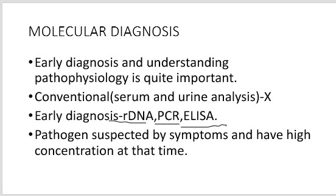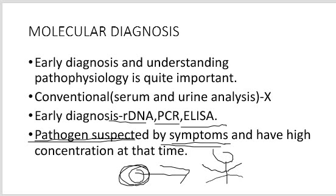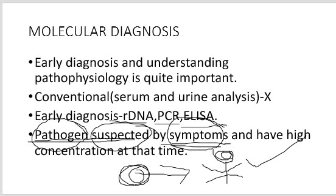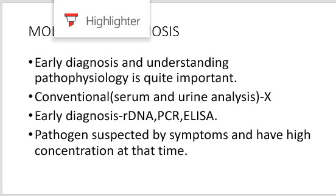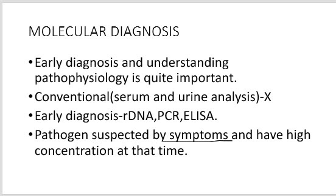A pathogen is usually suspected with the help of symptoms. For example, a pathogen creates symptoms in human beings such as abdominal pain or different kinds of symptoms, then we can suspect that something is wrong — there is some kind of pathogen. But when a particular pathogen shows symptoms, at that time there is a very high concentration of that pathogen, making it quite difficult to treat the disease.